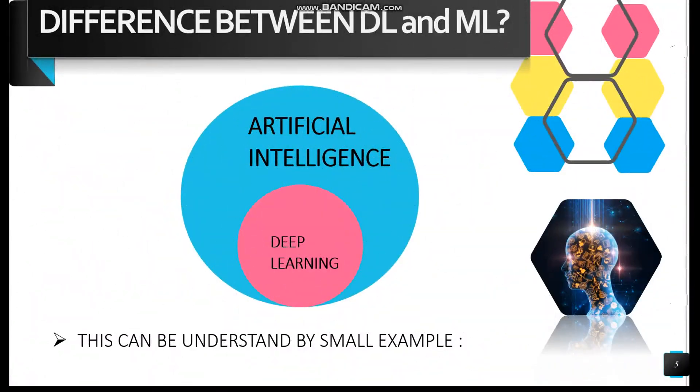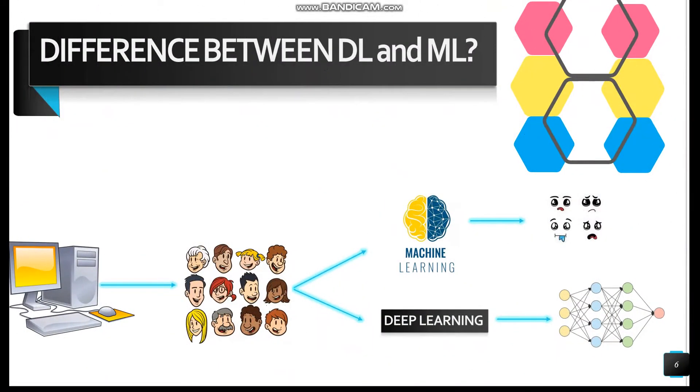Our next question is, what is the difference between Deep Learning and Machine Learning? This concept can easily be understood by a small example. Suppose we want to make a system that can recognize the faces of different people in an image.